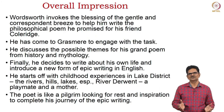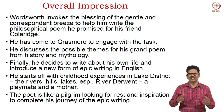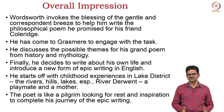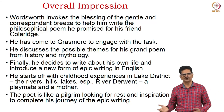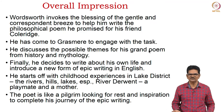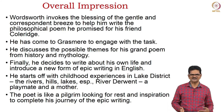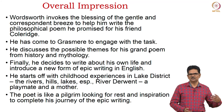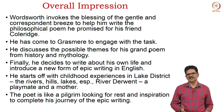On the whole, we have a good impression of Wordsworth's poem. Wordsworth invokes the blessing of the gentle and correspondent breeze to help him write the philosophical poem he promised for his friend Coleridge. He has come to Grasmere to engage with the task of completing this poem. He discusses possible themes from history and mythology, and finally decides to write about his own life, introducing a new form of epic in English. He starts with childhood experiences in the Lake District — the rivers, hills, and lakes, especially River Derwent, a playmate and a mother. The poet is like a pilgrim looking for rest and inspiration to complete his epic journey.